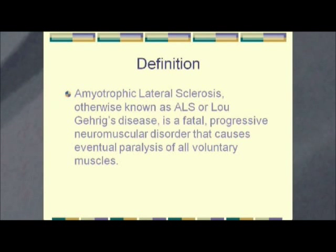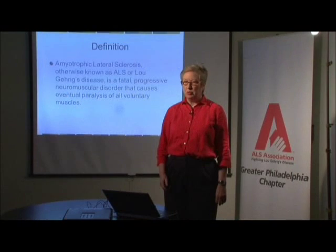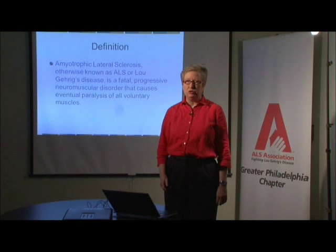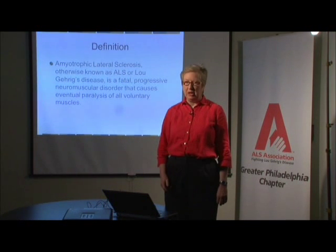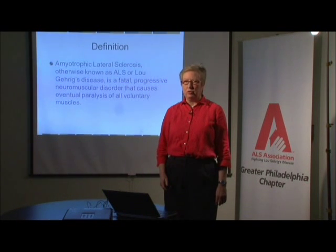To start with the definition, amyotrophic lateral sclerosis, otherwise known as ALS or Lou Gehrig's disease, is a fatal progressive neuromuscular disorder that causes eventual paralysis of all voluntary muscles. Most folks have heard of Lou Gehrig, a famous baseball player. He had symptoms of ALS in his early 30s, dropped out of baseball, and died in his mid-30s. In this country we call it Lou Gehrig's disease, but all over the world it's known as either ALS or motor neuron illness.